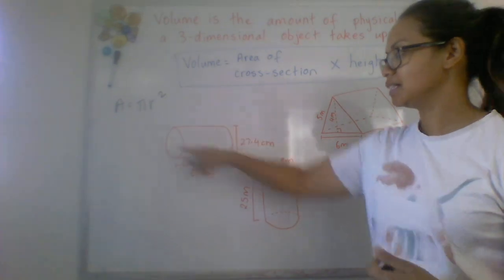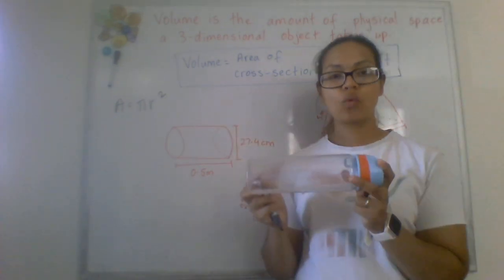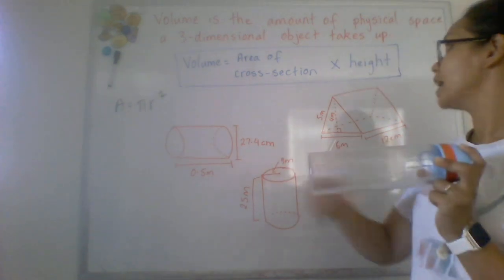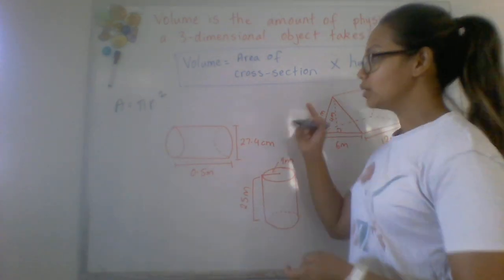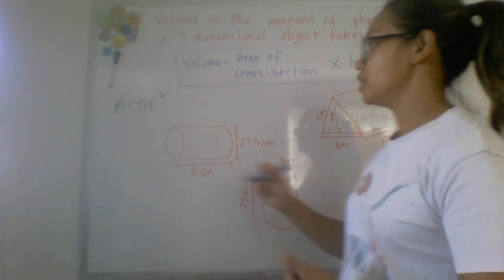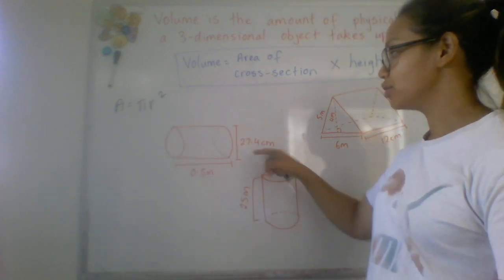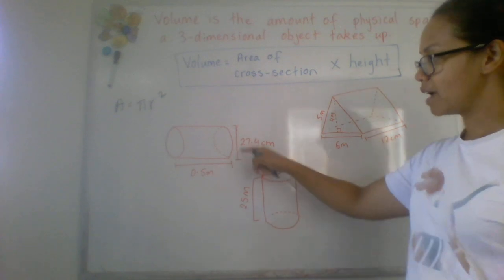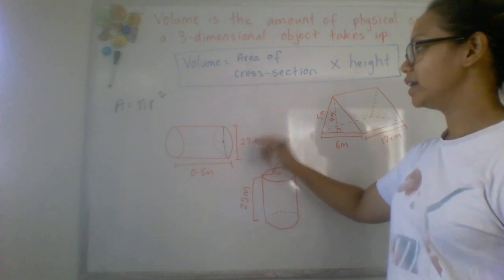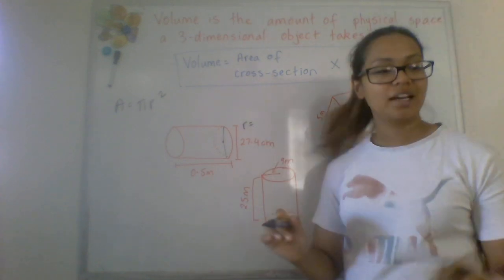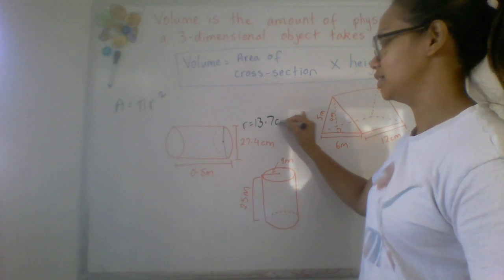If we're looking at this particular cylinder here that's just laying down, we want to find the volume or the amount of physical space that that shape is taking up. So our first step is we find the area. For this shape we're actually given the diameter here so we need to find the radius. If my diameter which is the distance across the center of the circle from one end to the other is 27.4, my radius is half of that which gives me a radius of 13.7 centimeters.